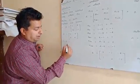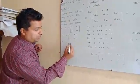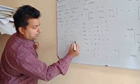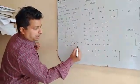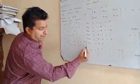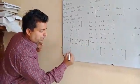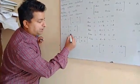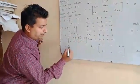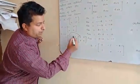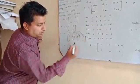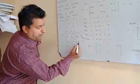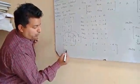Then we add like this: matrix A plus matrix B. In addition, we add corresponding elements of one matrix to the corresponding elements of another. That is A11 to B11: 1 plus 0. Then A12 to B12: 2 plus 5. Then A21 to B21: 4 plus 3.